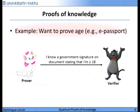Let's recapitulate very quickly what we want from a proof of knowledge. We want to prove not only that a certain mathematical fact is true, but that we know something. For example, we want to prove our age to some vendor. We have a certificate issued from the state, and we want to prove that we know a government signature on a document that says we are at least 18 years old — without revealing this document directly, because we might not want to tell everyone our actual age.